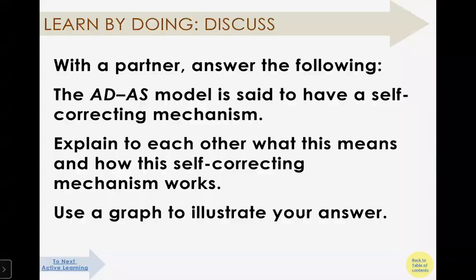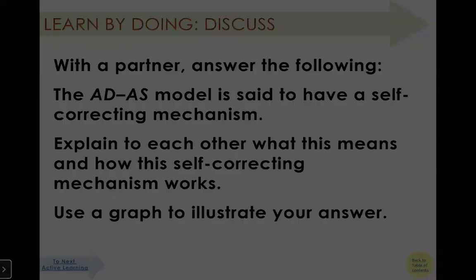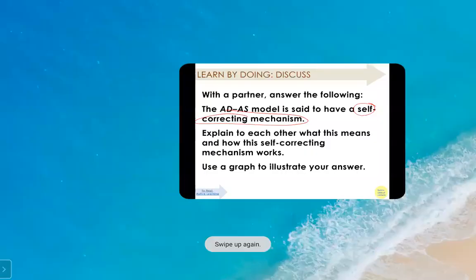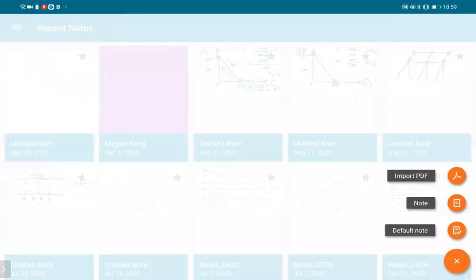Here is a discussion: the AD-AS model we just discussed is said to have a self-correcting mechanism. Explain to each other what this means and how this mechanism works, and use a graph to illustrate your answers.